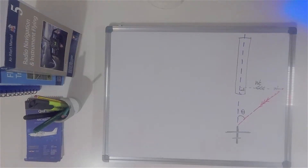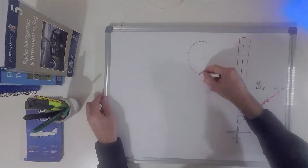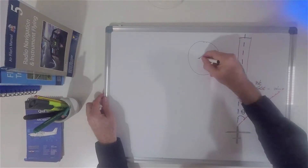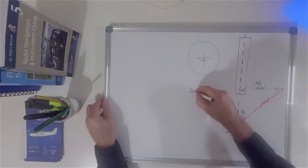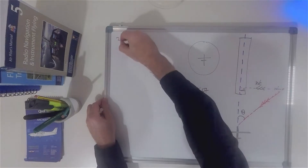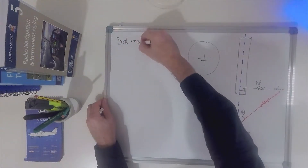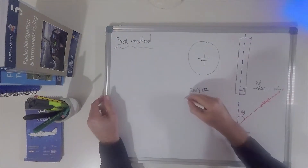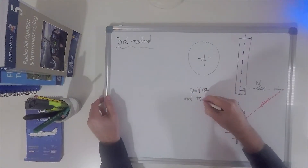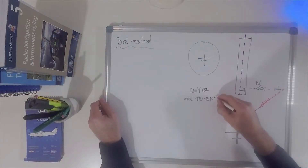Finally, the last method is a gross approximation method. It is an instrument method and we just need to look at our DI — the direction indicator. So let's say we are again on final approach for runway 07 and the wind is from 110 degrees at 18 knots.